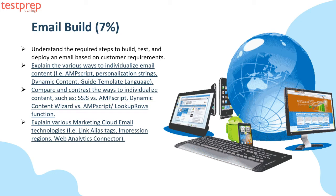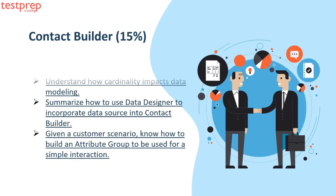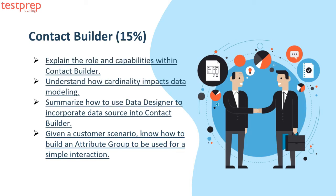Fourth, explain various Marketing Cloud email technologies, including link alias tags, impression regions, and web analytics connector. Number seven: Contact Builder. It contains — first, explain the role and capabilities within Contact Builder. Second, understand how cardinality impacts data modeling. Third, summarize how to use Data Designer to incorporate a data source into Contact Builder. Fourth, given a customer scenario, know how to build an attribute group to be used for a simple interaction.